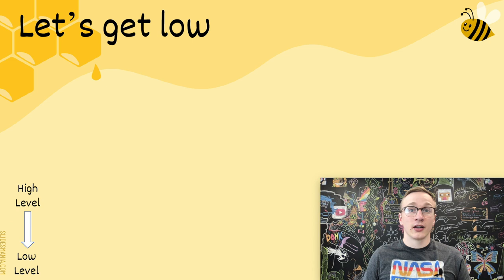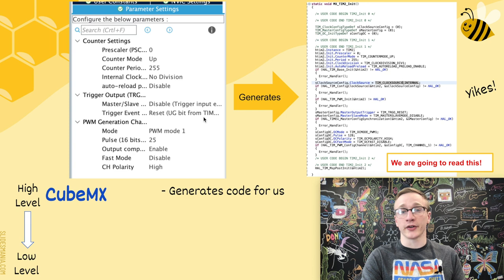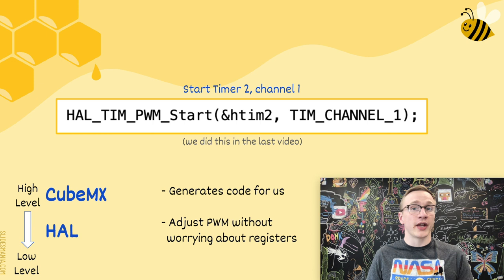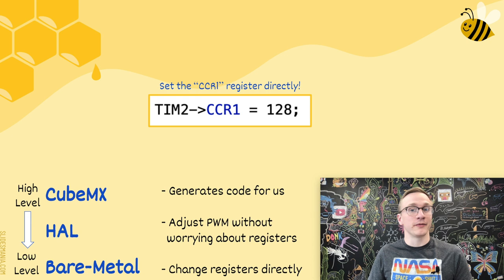Let's start with high-level stuff and work our way down to a bare metal implementation. We'll kick things off by looking at the code that CubeMX generates for us. In the last video, we used CubeMX to set up PWM, and this ends up generating code which does all of the magic for us. Next, we're going to look at the hardware abstraction layer and see how we can control PWM with that. We saw one example of HAL being used in the last video when we used it to start the timer. And finally, we're going to tear down that HAL implementation to see what registers are actually being changed behind the scenes.